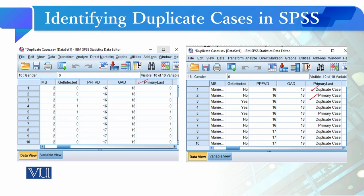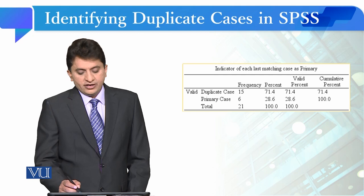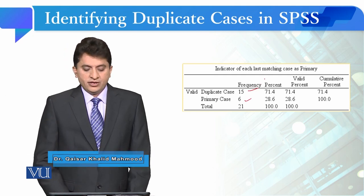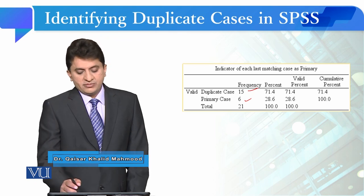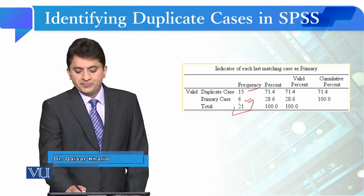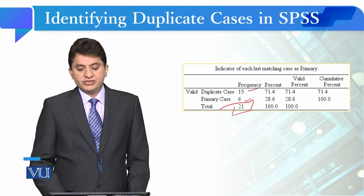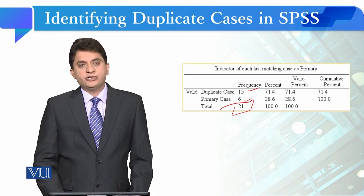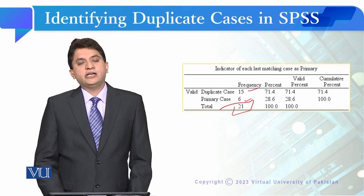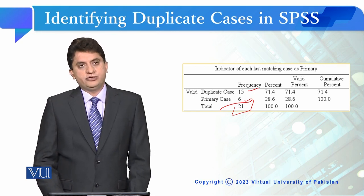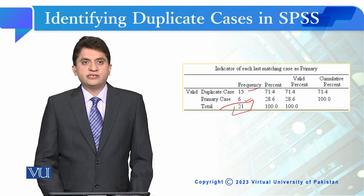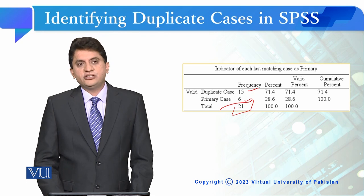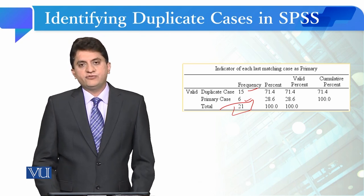You can identify the results in the output view, which shows an overall summary of how many cases were duplicates. In this dataset, the total sample was 21 — 15 were duplicate cases and 6 were the original primary cases. This command is used for data cleaning to delete cases which are duplicates, whether entered unintentionally or due to data entry error.